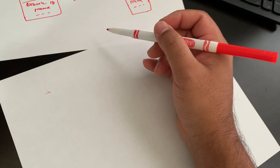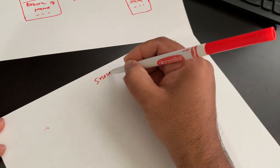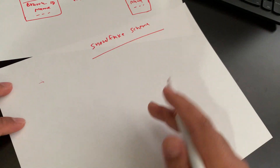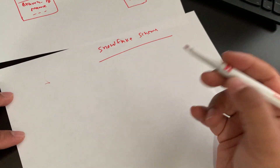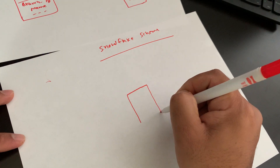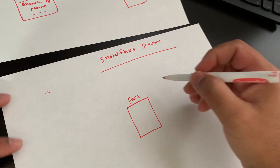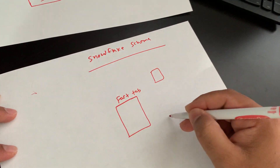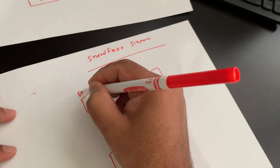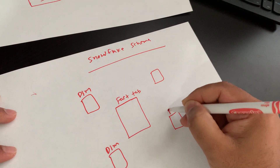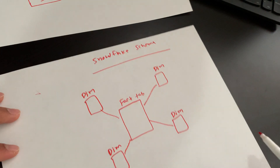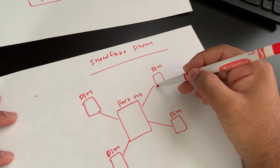Now let's take a look at snowflake schema. Snowflake schema is nothing but an extension of star schema. In star schema, we have the fact table in the center surrounded by dimension tables. In snowflake schema, if the data warehouse dimension tables grow very large and need to be split up, they split one dimension into multiple dimensions.